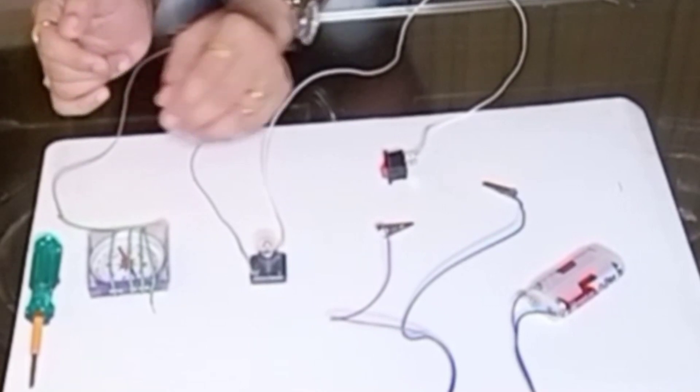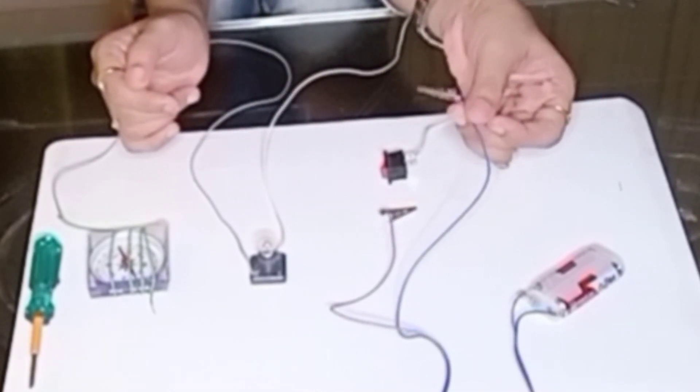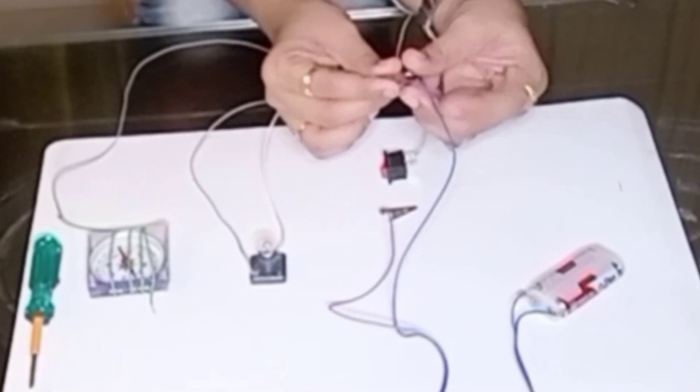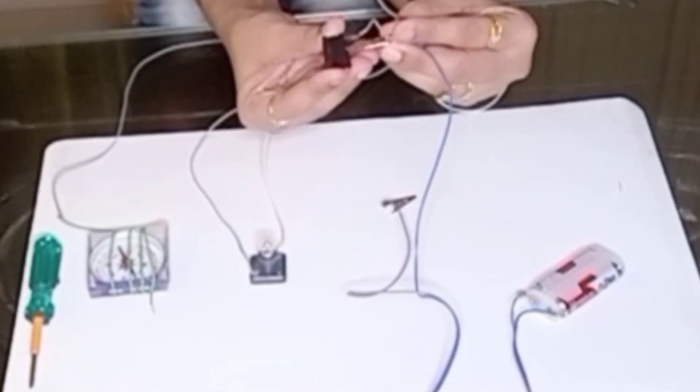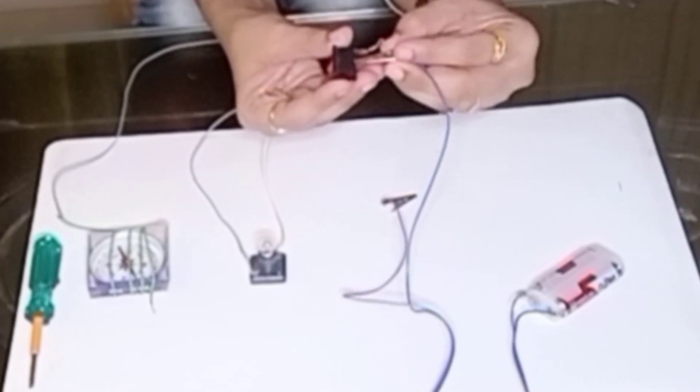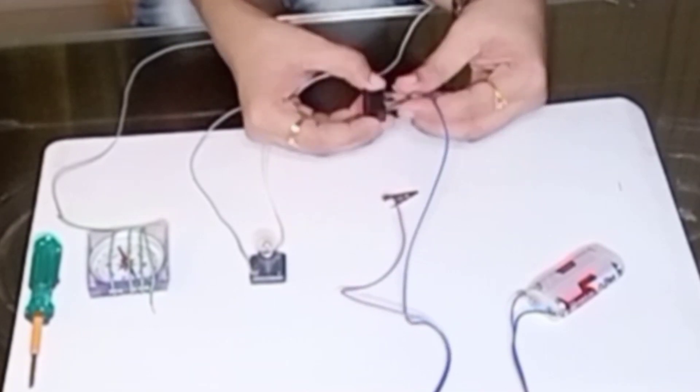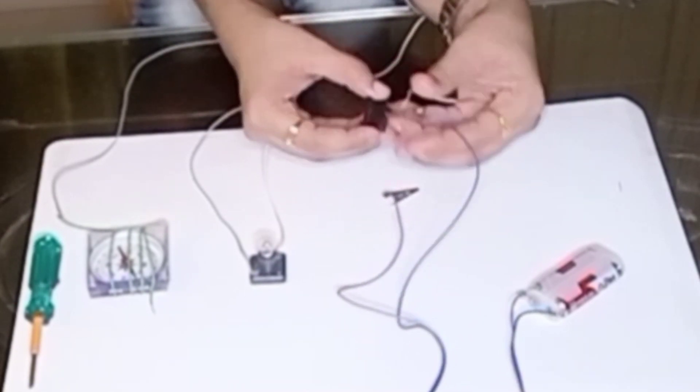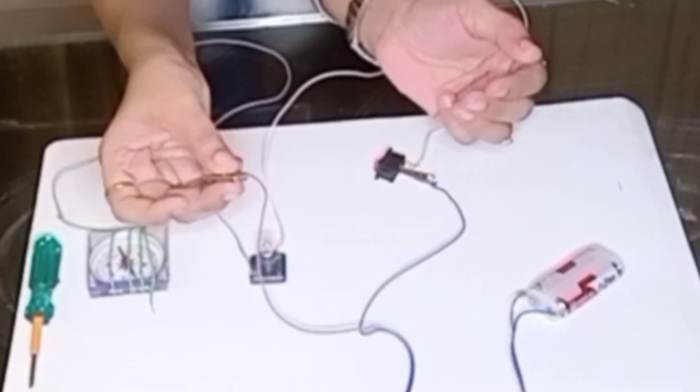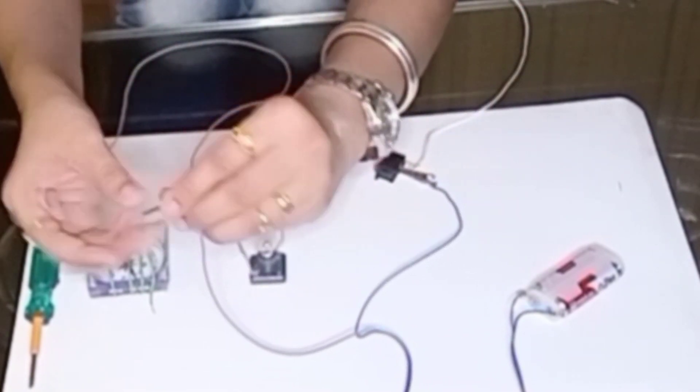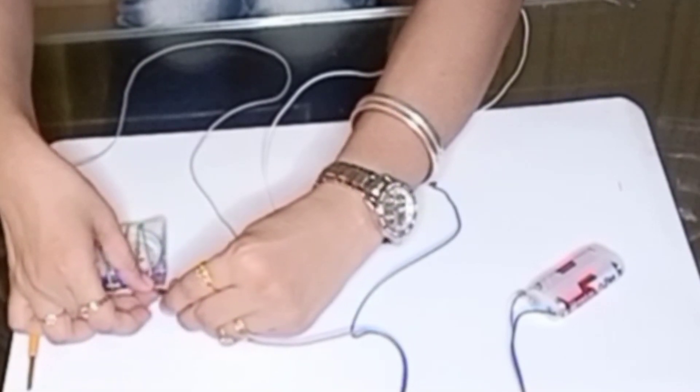My next step is I will take this blue wire which is the positive terminal and I am going to fix this to this on-off switch at one end. I will just clip it. I am done. And I will take the purple wire which is the negative terminal and I am going to fix this to this end of the wire.